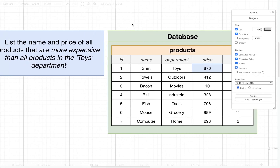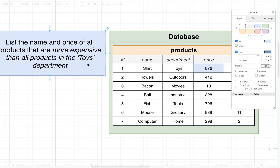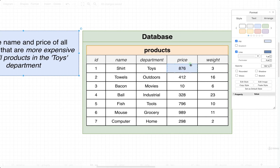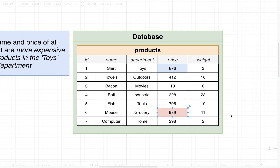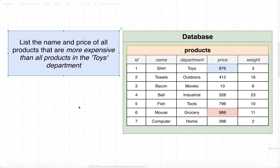So we essentially want to find all other products more expensive than $876. Looking through the data, there is only one other record that qualifies: the record with ID 6. It appears to be a mouse in the grocery department for some reason, with a price of $989. That's the row we're ultimately trying to find when answering this query.